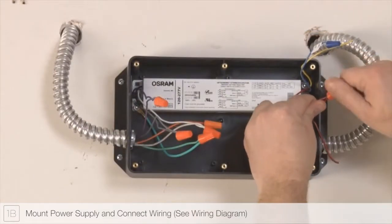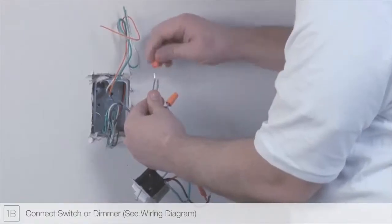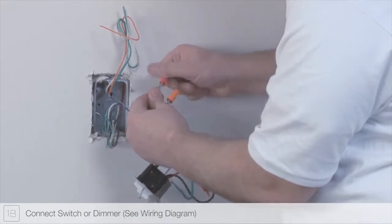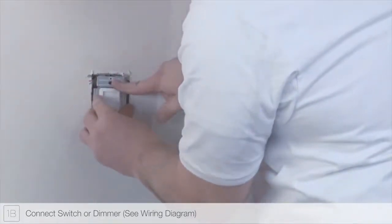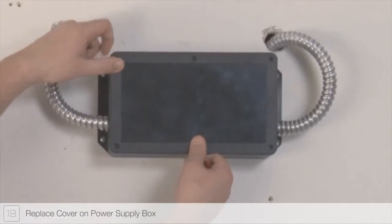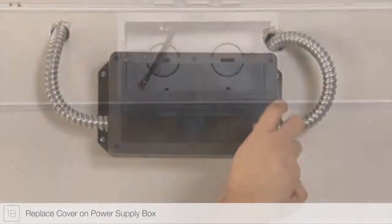Consult the wiring diagram included with the remote power supply to connect it to the main power. Reference the wiring diagram included with your installation instructions to connect either a standard switch or if desired a compatible dimmer.